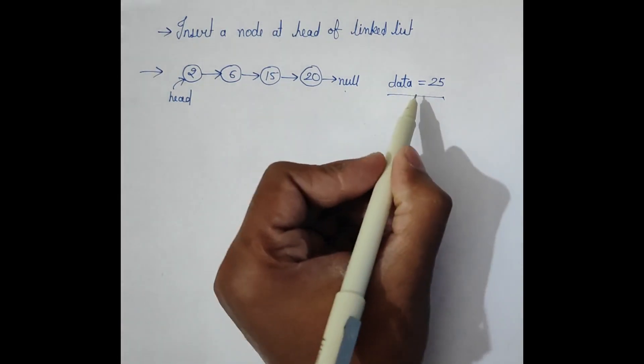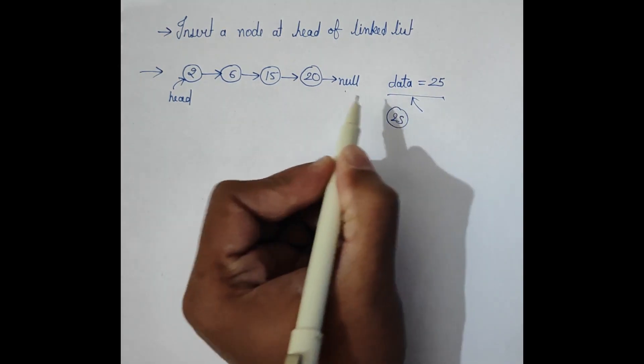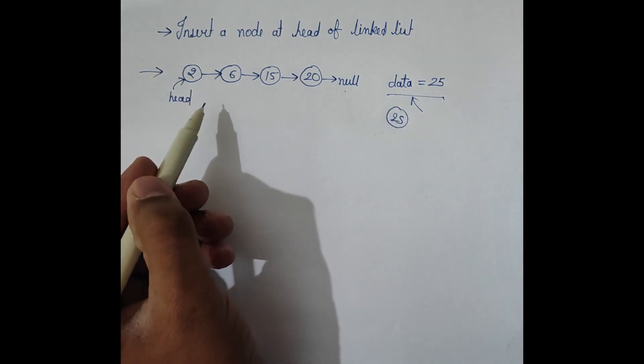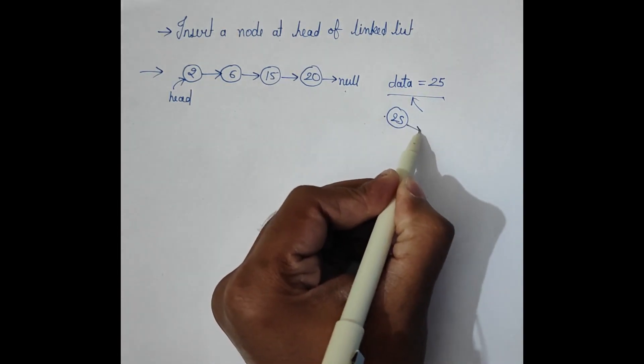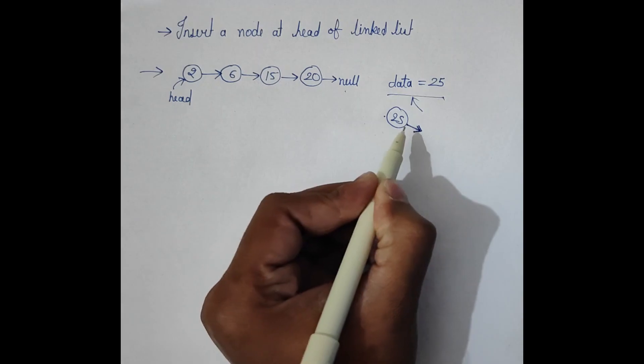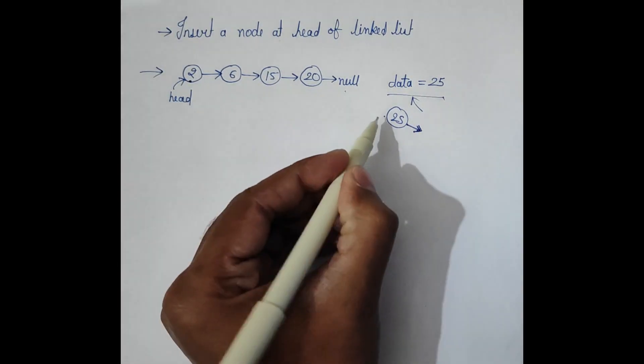We will have a node from this data and this node will be placed at the head of the linked list, which means that the next pointer of the linked list is separated from this node and then connected to our new node.